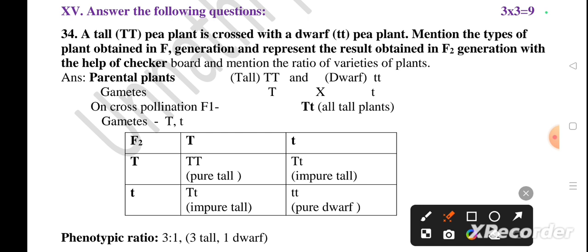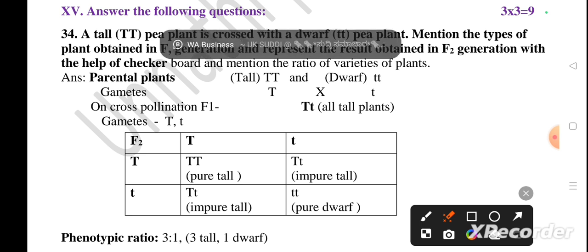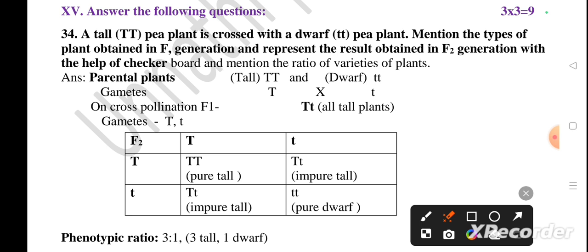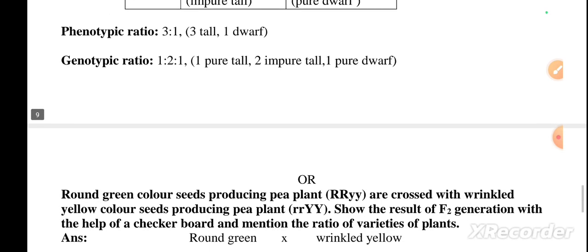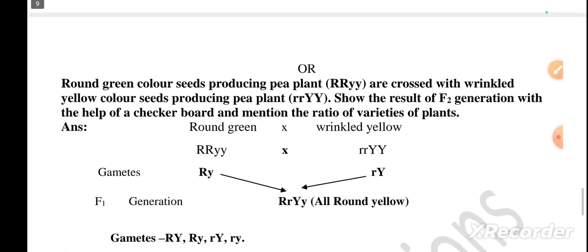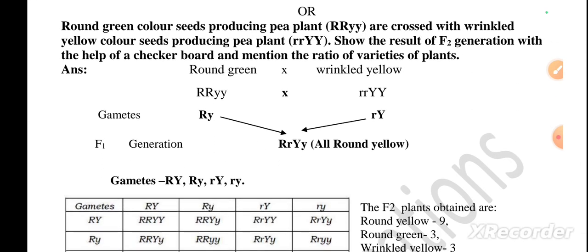When these F1 tall plants undergo self-pollination, F2 generation is produced. Using a checkerboard with Tt × Tt: one pure tall (TT), two impure tall (Tt), and one pure dwarf (tt) are available. Therefore the phenotypic ratio is 3:1 — three tall, one dwarf. The genotypic ratio is 1:2:1 — one pure tall, two impure tall, one pure dwarf.